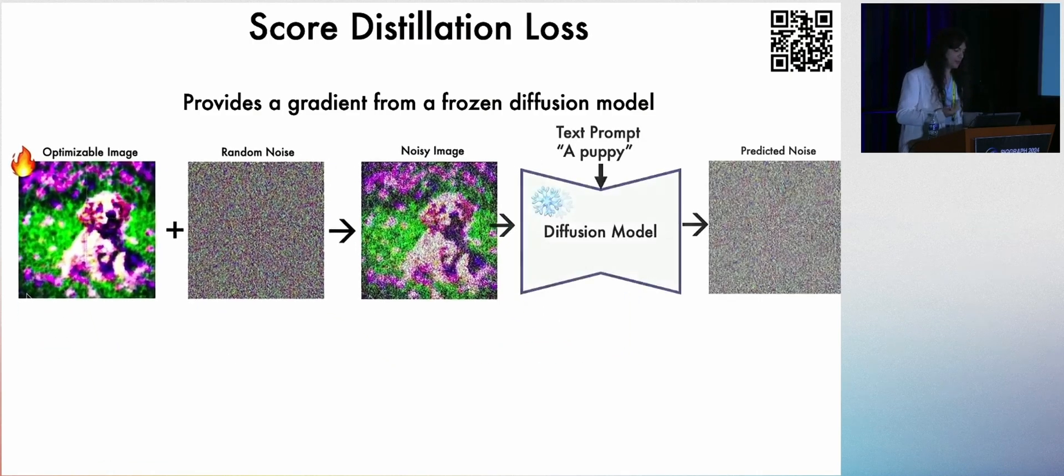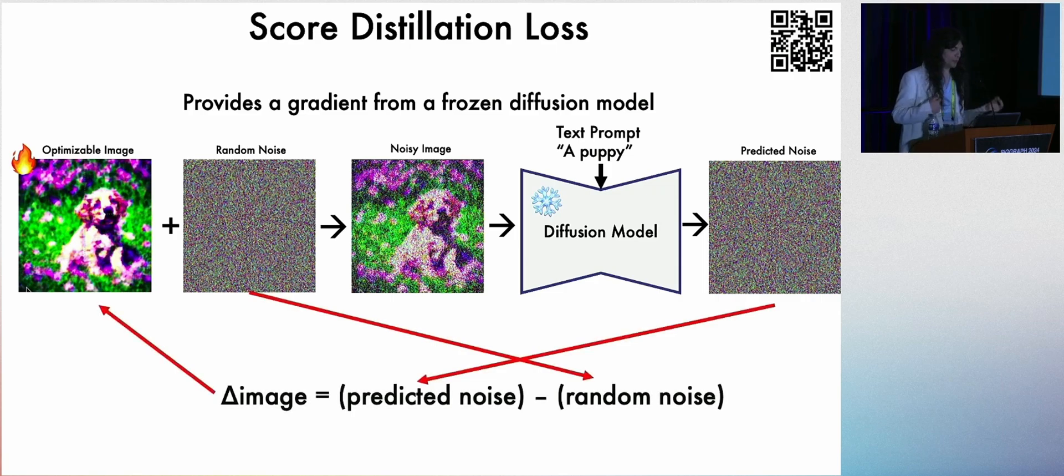Then given some text prompt, we use stable diffusion to predict that noise, and the difference between these two noises is the gradient that we pass to our image to optimize it. As we use score distillation loss, this optimizable image will begin to approach its text prompt.